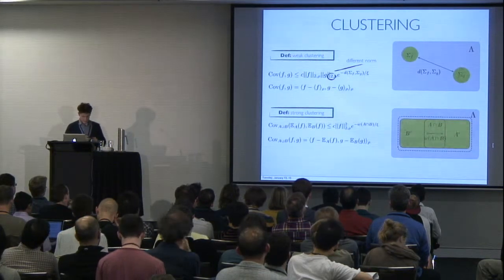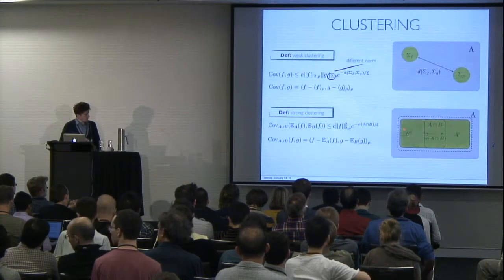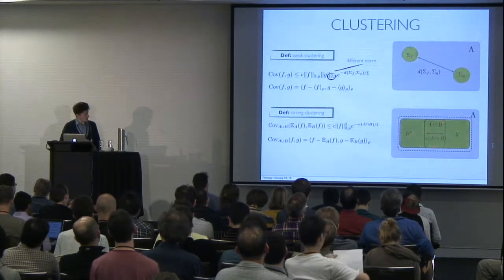But one should understand it in the following way. You have one subset of the lattice, call it A. Another subset of the lattice, call it B. And they're overlapping. And what you care is about the overlap here. So we assume that the overlap is going to be large enough.